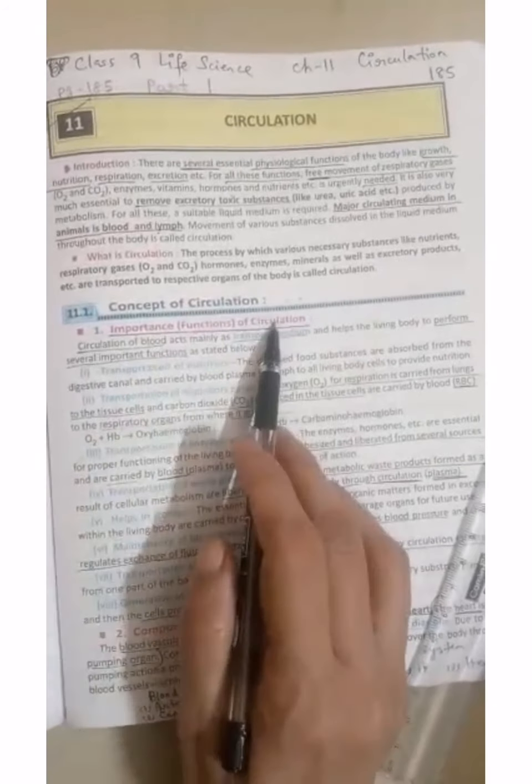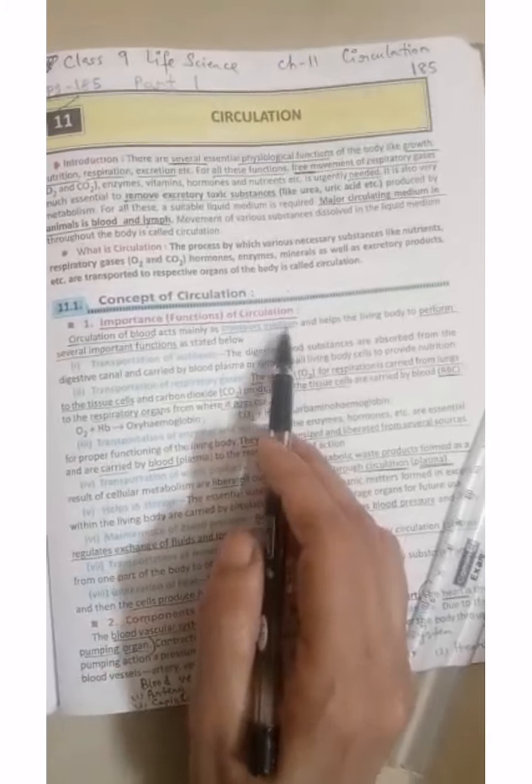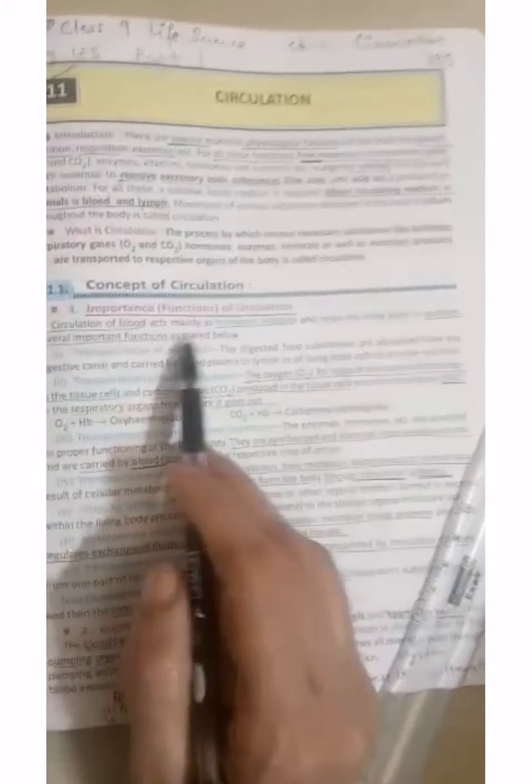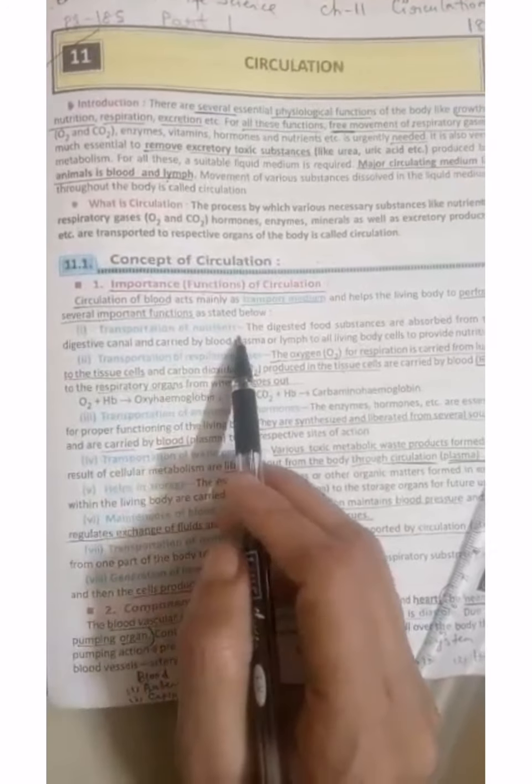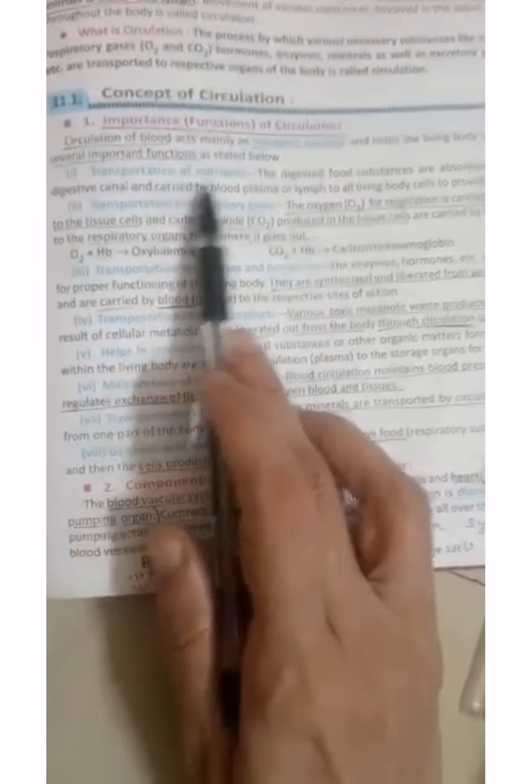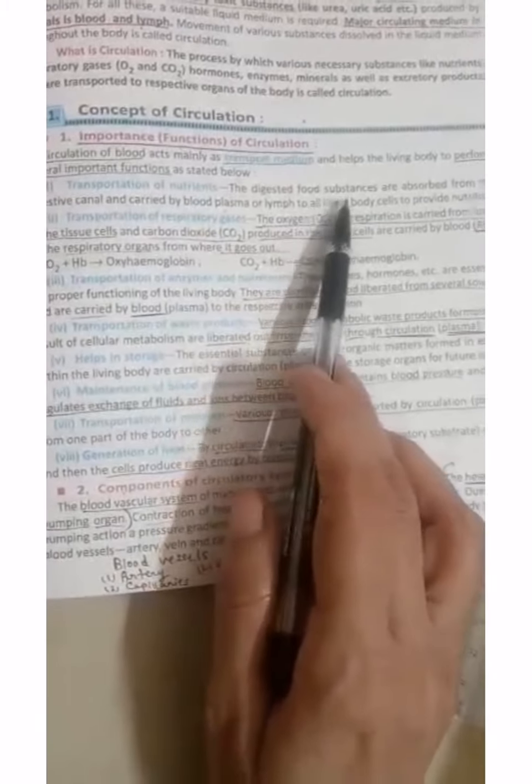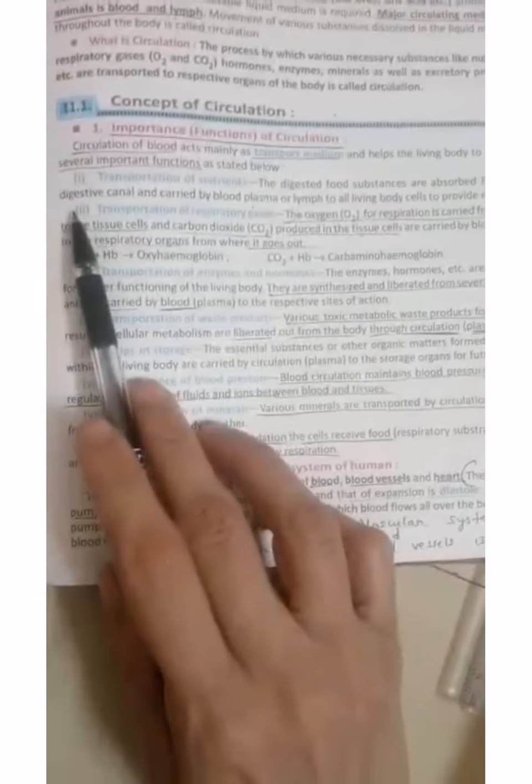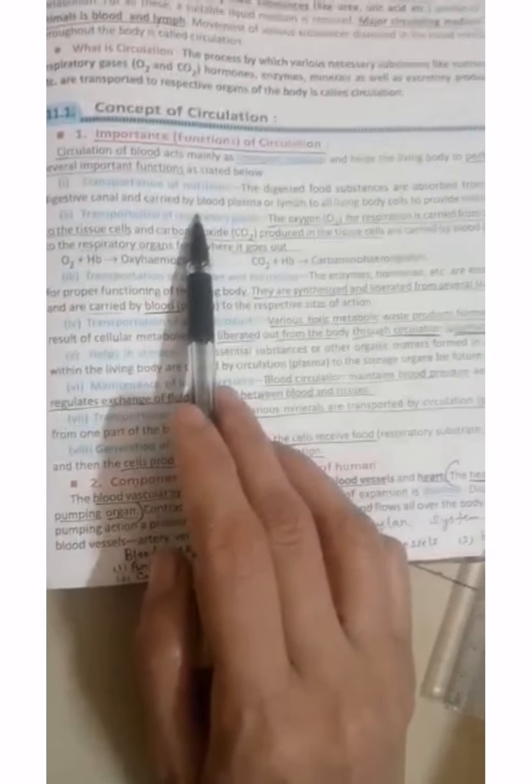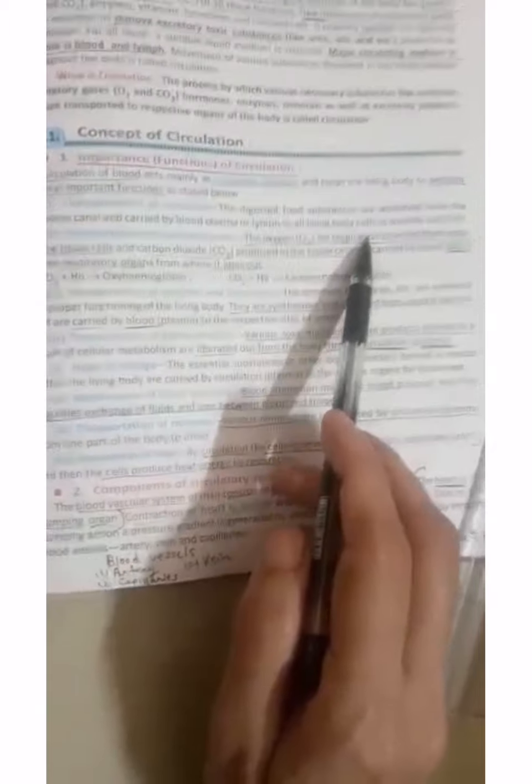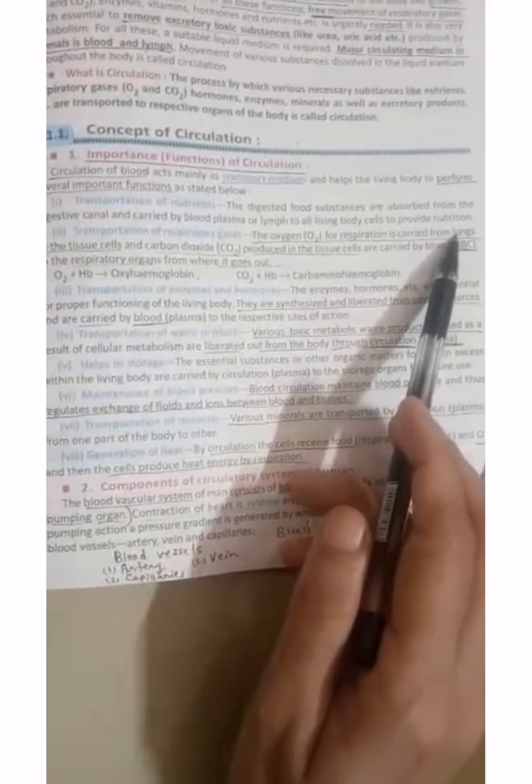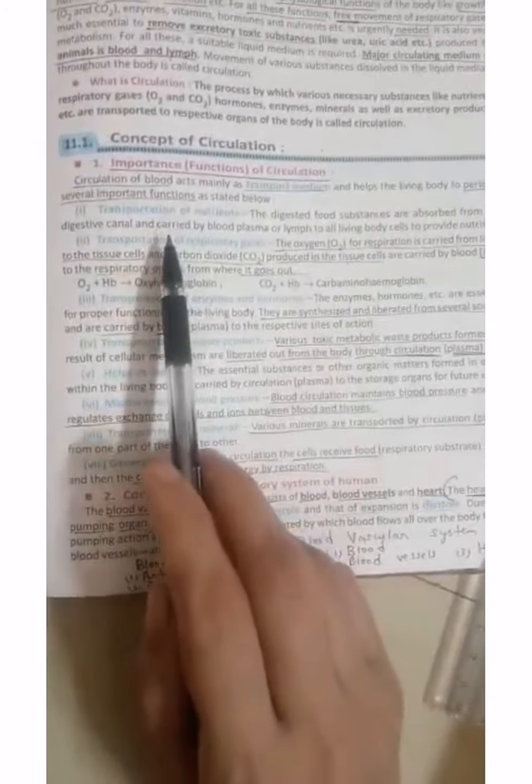Next is concept of circulation, that we can say the functions of circulation. So circulation of blood acts mainly as transport medium. Number one is transportation of nutrient. Digested food substance will be absorbed from the digestive canal and carried by blood plasma to the living cells so that nutrition is provided.